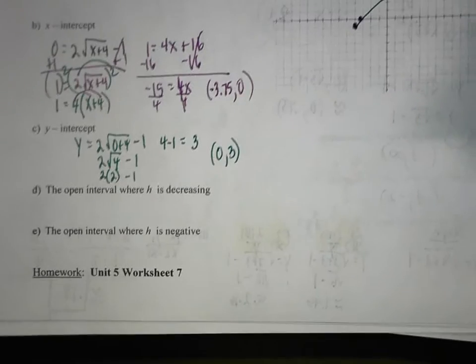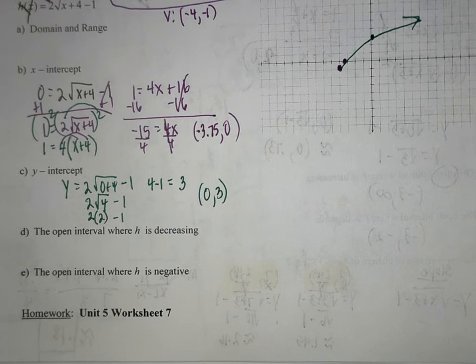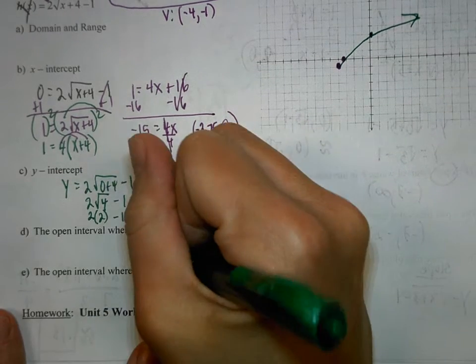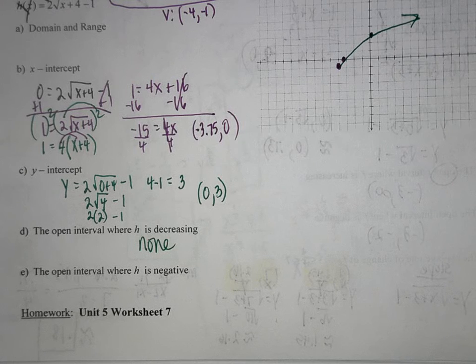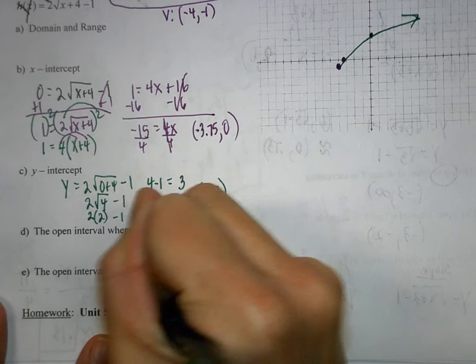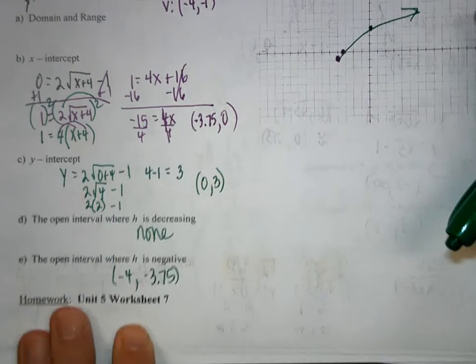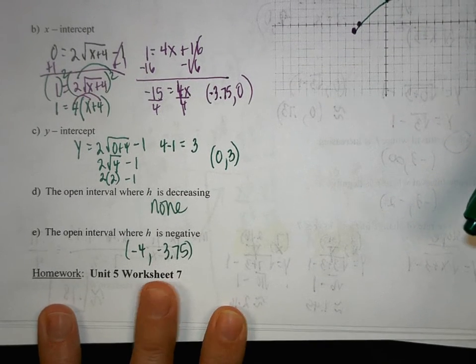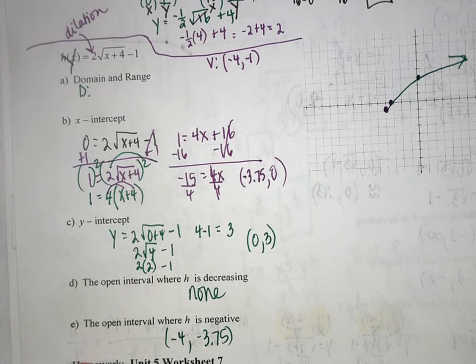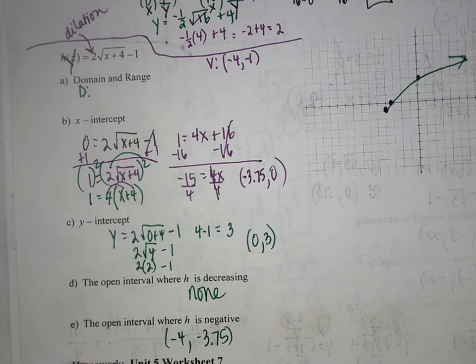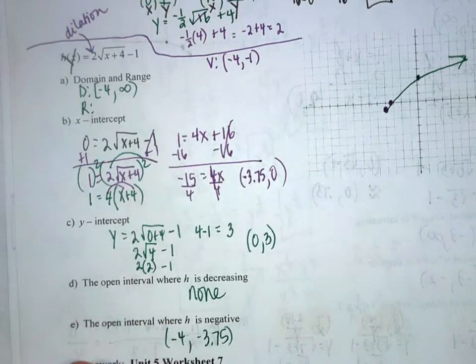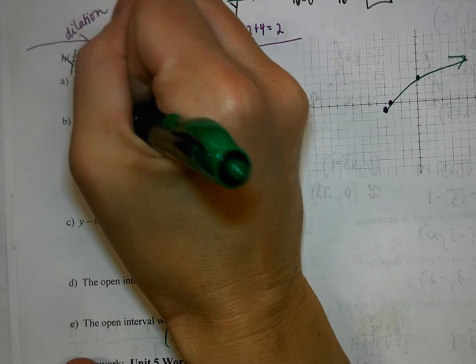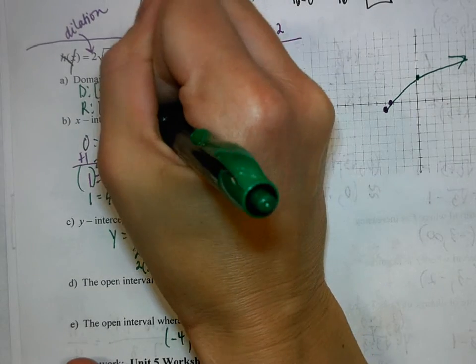The graph is never decreasing — it's always increasing. The function is negative on the interval (−4, −3.75) because that is where it crosses the X axis. The domain is [−4, ∞) — that's where the smallest X value is. The range: the smallest Y value is −1 and it goes to positive infinity, so the range is [−1, ∞).